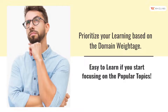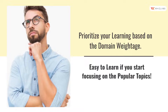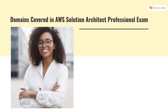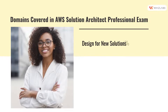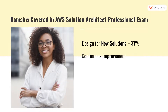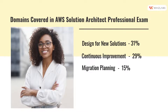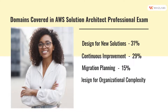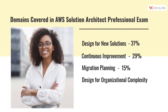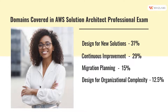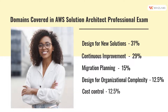Prioritize in such a way. Let us explore now. Design for New Solutions: 31%. Continuous Improvement: 29%. Migration Planning: 15%. Design for Organizational Complexity: 12.5%. Cost Control: 12.5%.